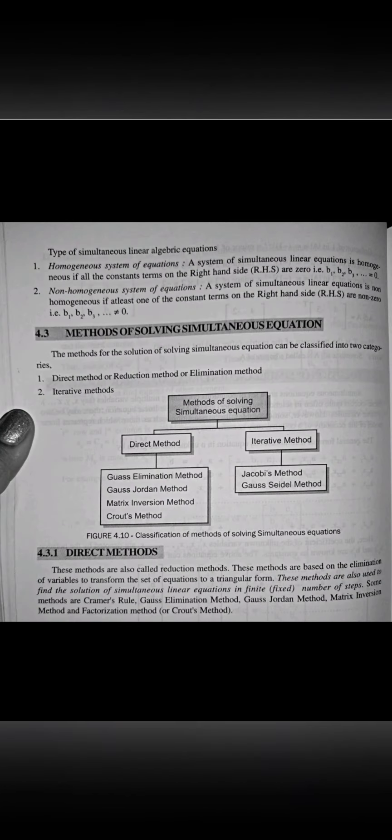The next chapter of your syllabus is Solution of Simultaneous Linear Algebraic Equations. First I will explain what linear algebraic equations are — you already know this from the numericals solved. These equations are of two types: homogeneous and non-homogeneous. There are two methods: direct method and iterative. Gauss elimination and Gauss-Jordan are direct methods, and Gauss-Seidel is iterative.